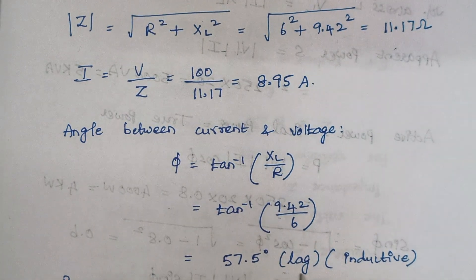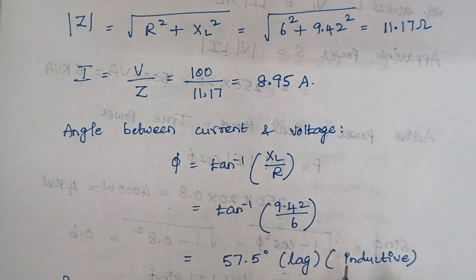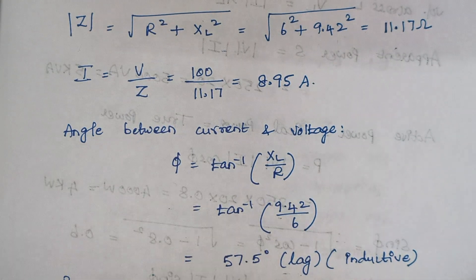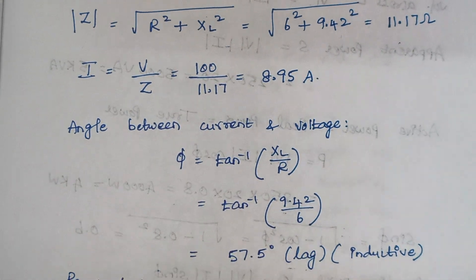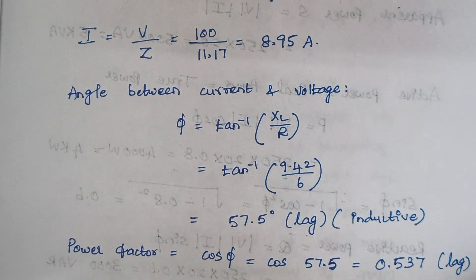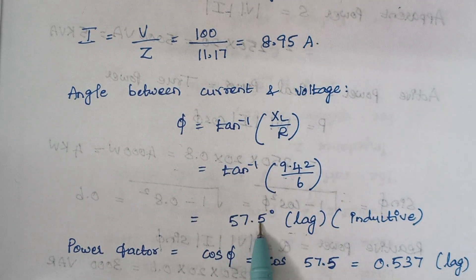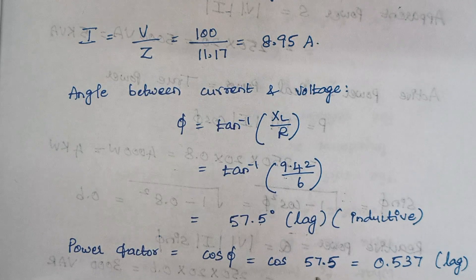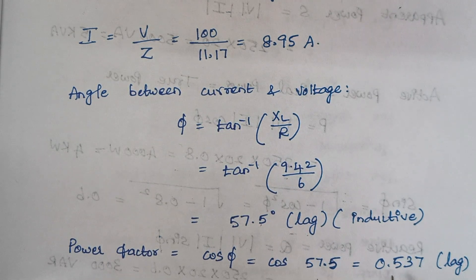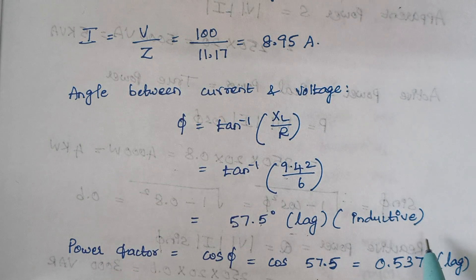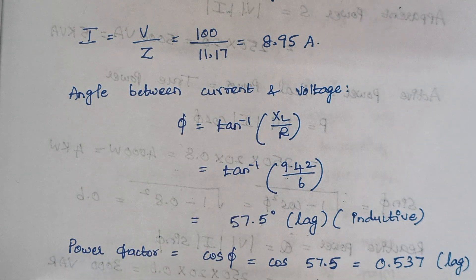We mention it as lagging because we have an inductor. The next thing is calculating power factor. Power factor is nothing but cos φ. We know the value of φ, so substituting gives 0.537. Since we have an inductive load, the value is said to be lagging.